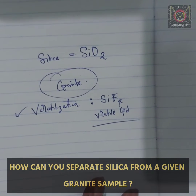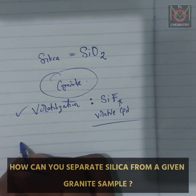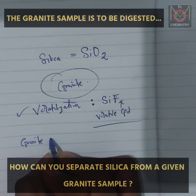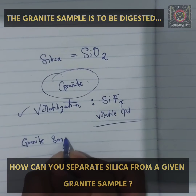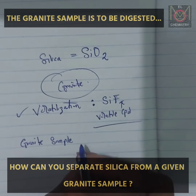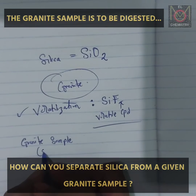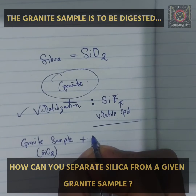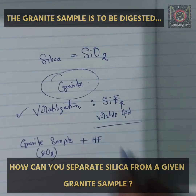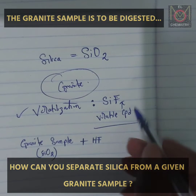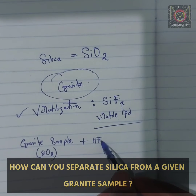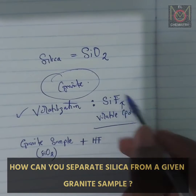So all we have to do is take the granite sample containing silica and treat it with hydrogen fluoride. Why hydrogen fluoride? Because silica can actually react with fluorine to give you silica tetrafluoride.